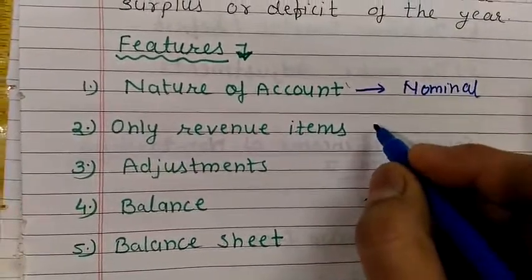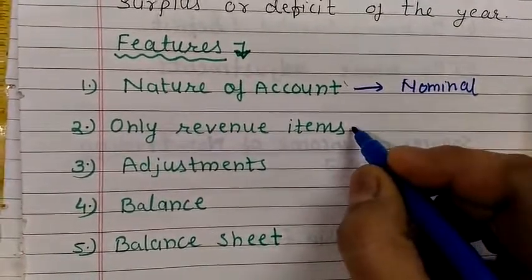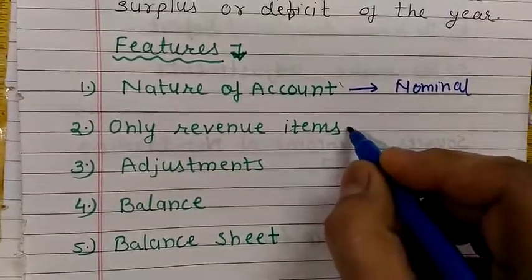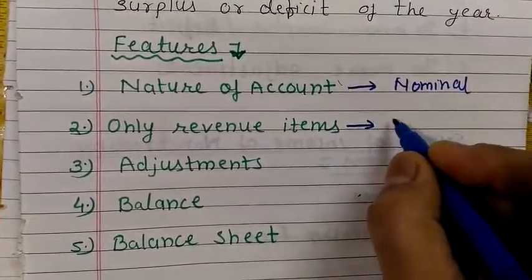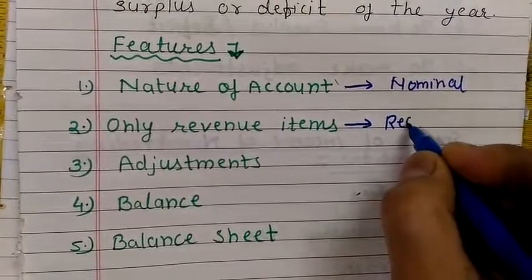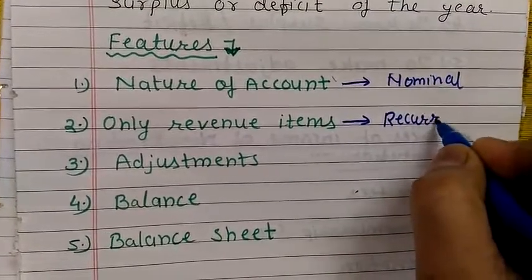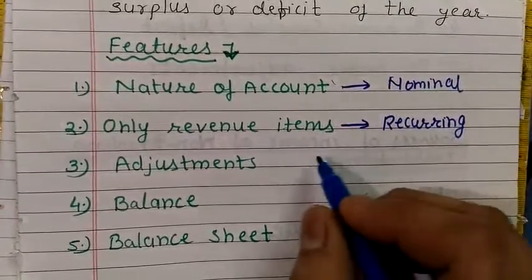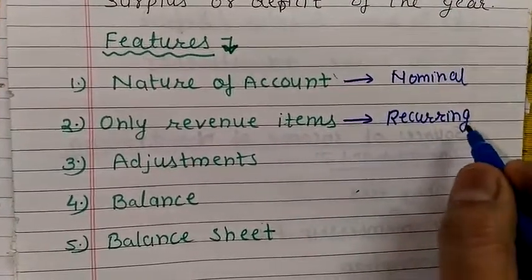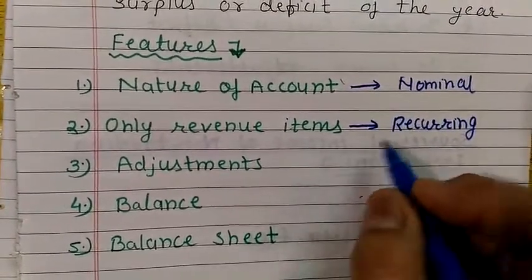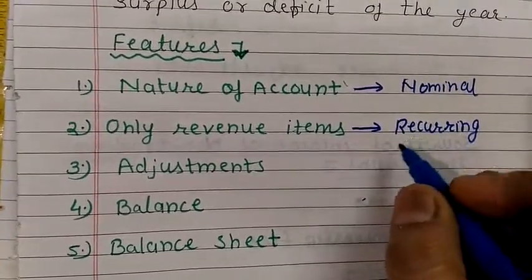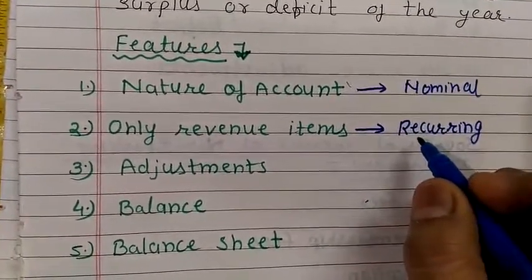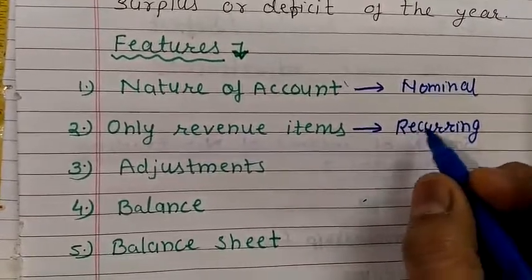In this account, only revenue items are written. Revenue items means those items which are recurring in nature. Only this type of items are written in this account. Recurring items like salary, bonus, commission, subscription, etc. These are recurring items.